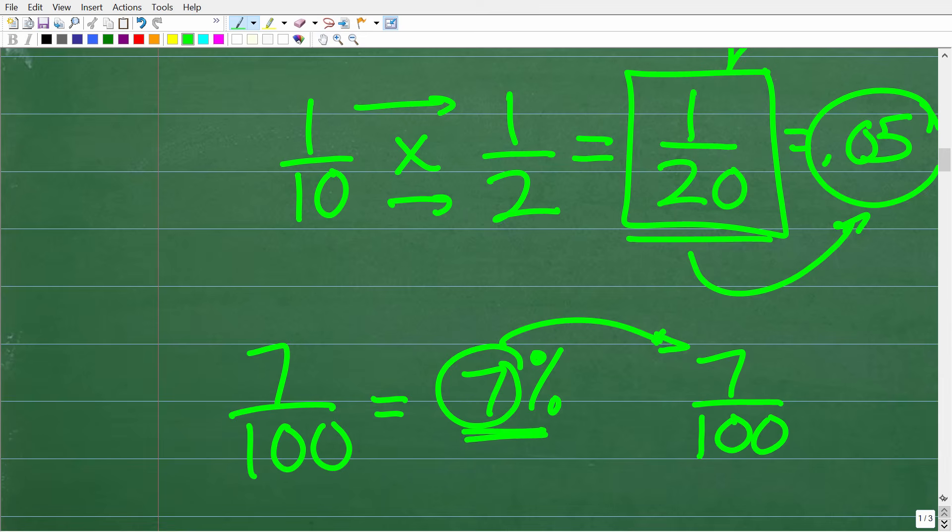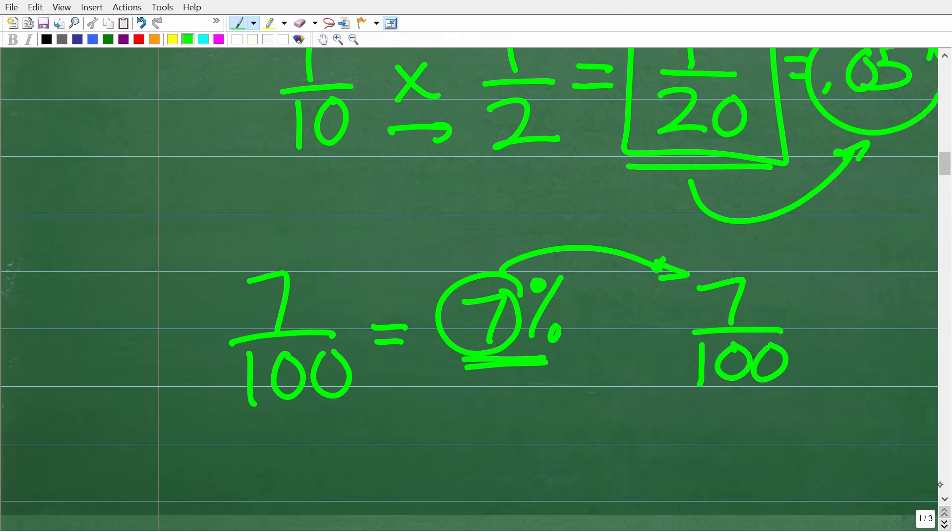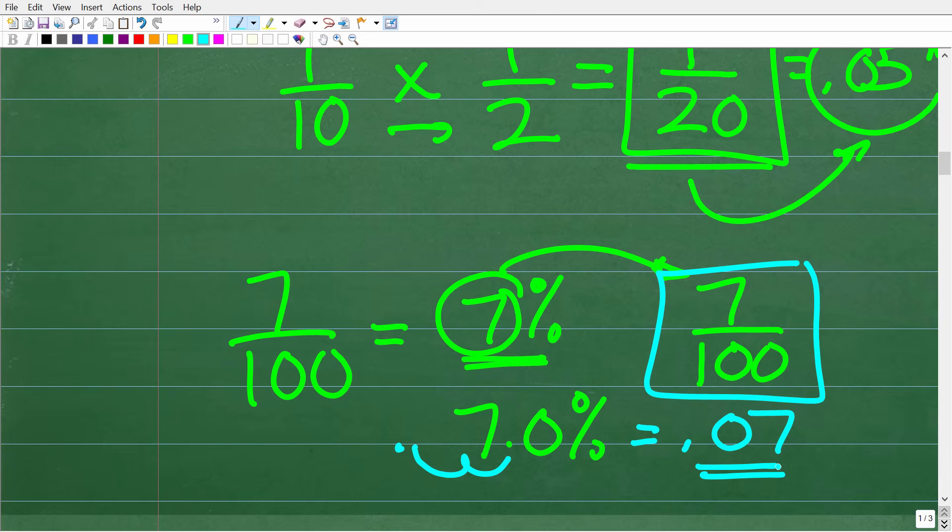Now if I said express 7 percent as a decimal, what would you have? Well, you have 7.0 percent and if I move the decimal point over two places to the left, I'm going to get 0.07. So here you have 7 out of 100. So if you take 7 and divide it by 100, you'll get the decimal 0.07.